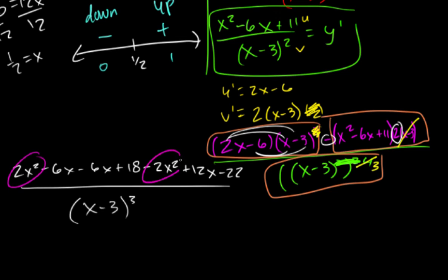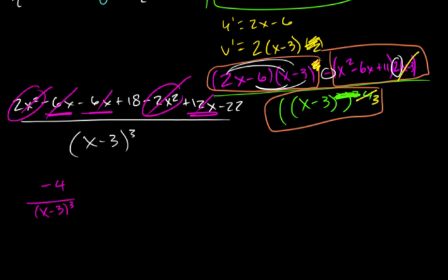This and this cancel. Negative 6x, negative 6x, positive 12. That all cancels. And then that's just going to be negative 4. This is our second derivative. Finally got there.